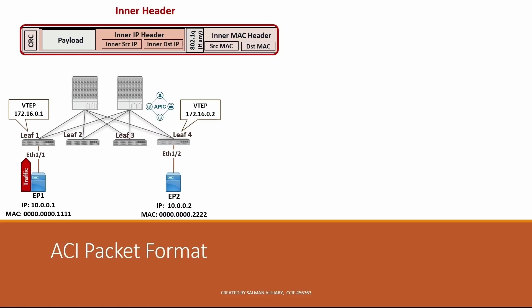If the original traffic is VLAN-tagged, an 802.1Q tag will be added. The source IP address is 10.0.0.1 and the destination IP is 10.0.0.2. The source MAC is always the sender's MAC address, and the destination MAC can be either the destination endpoint's MAC — when source and destination are in the same subnet — or the gateway MAC address. If the gateway is in the ACI fabric, it will be the bridge domain MAC address.